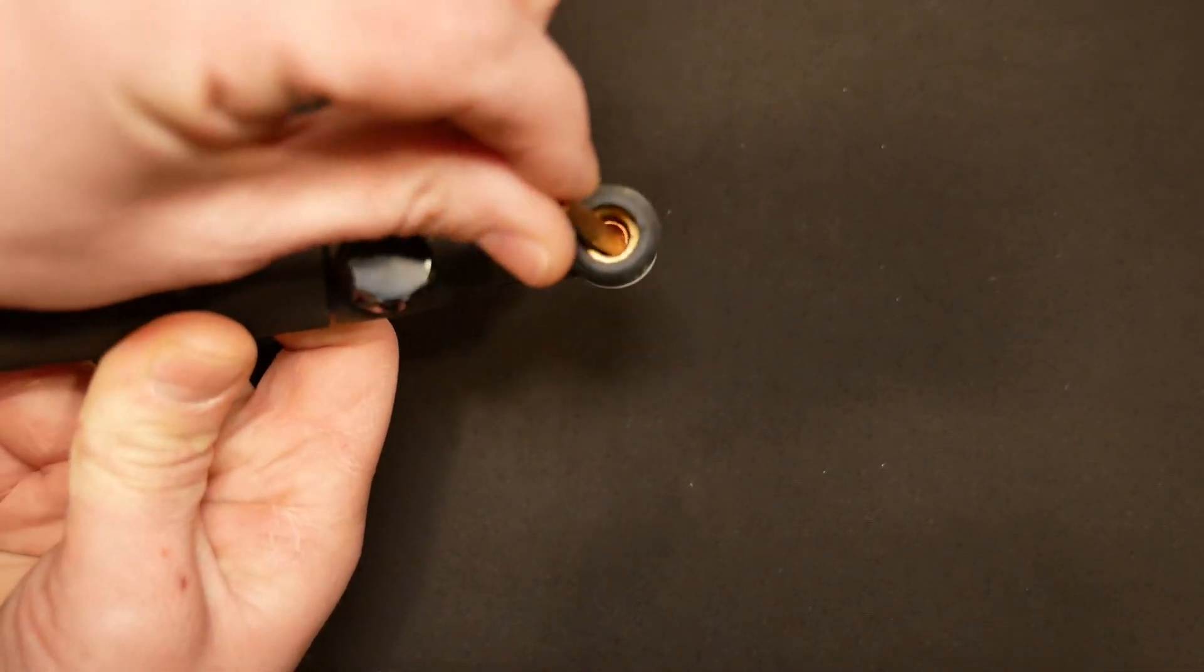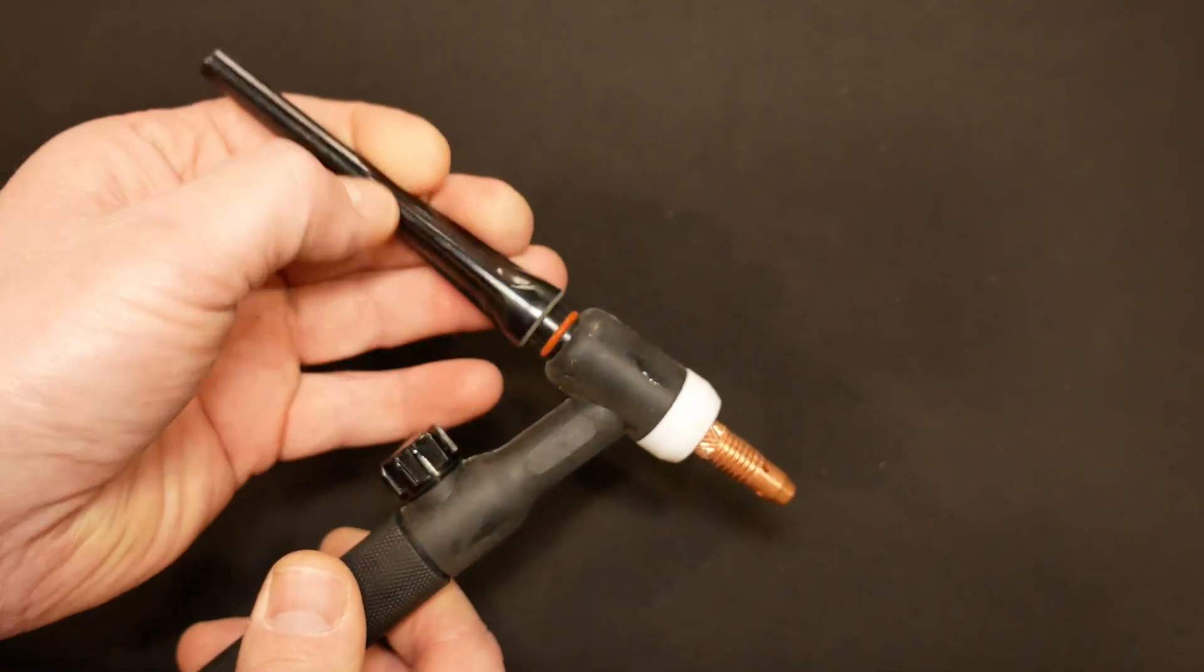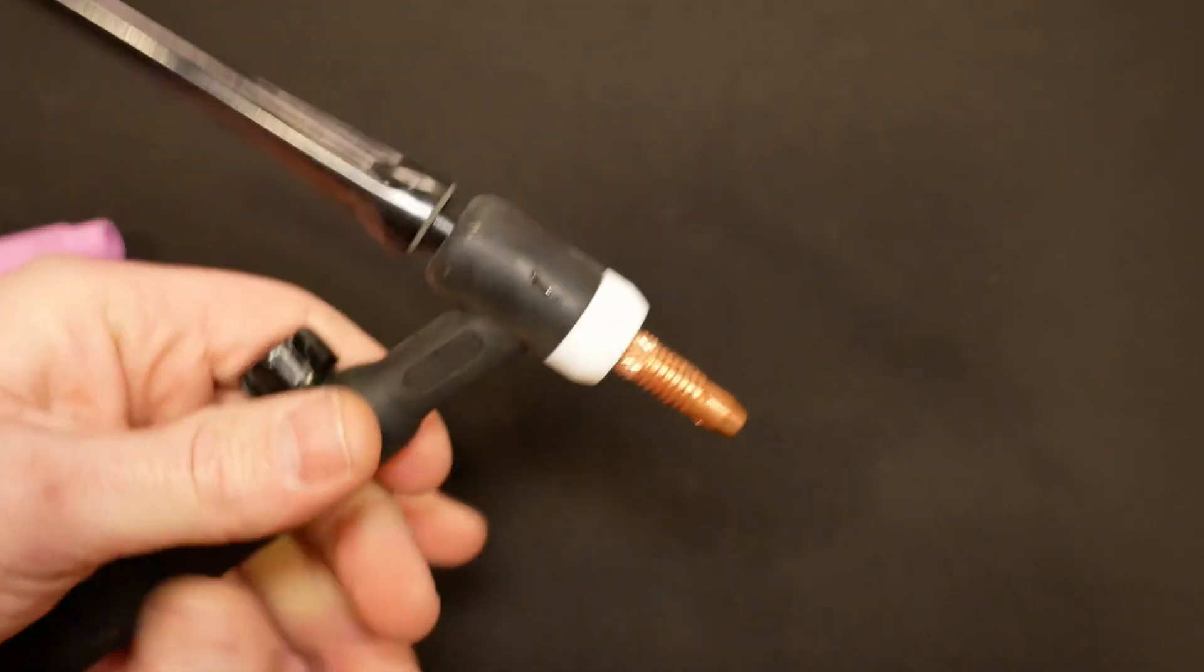Because we'll be starting off with a fresh tungsten, we'll use a long back cap. Go ahead and install that long back cap on the back of the torch body, but don't tighten it down all the way just yet.